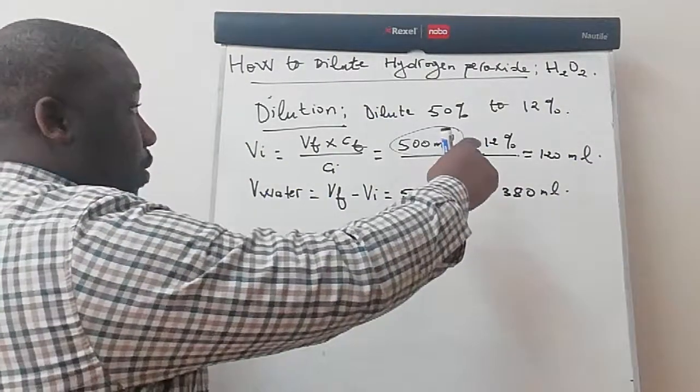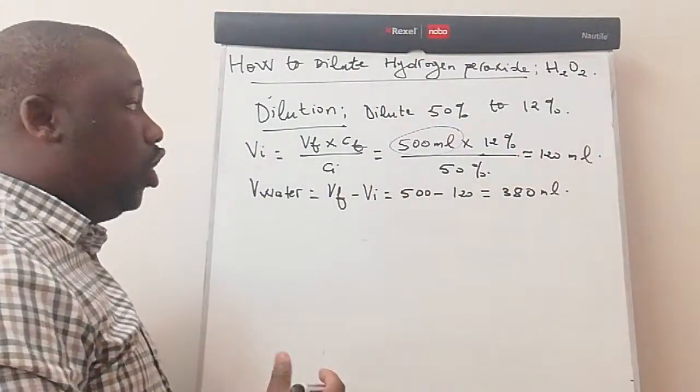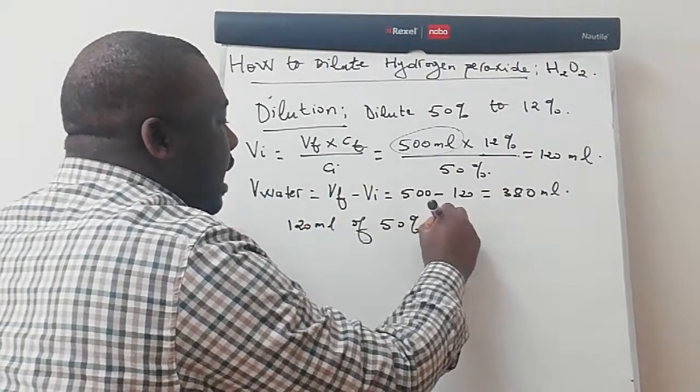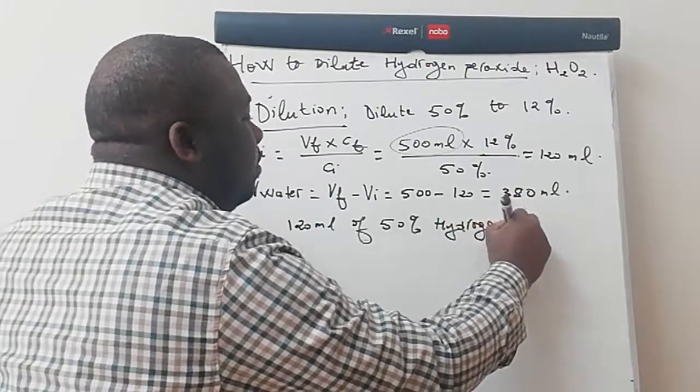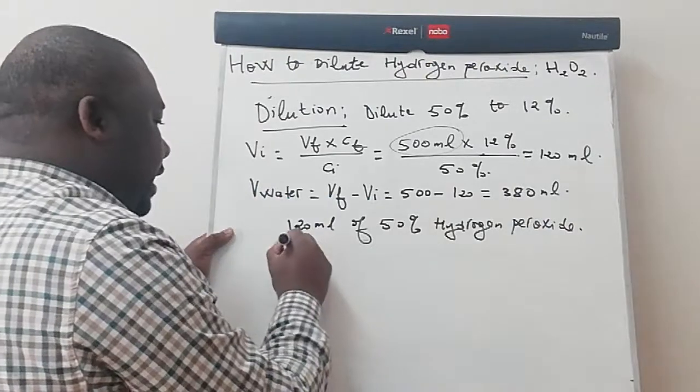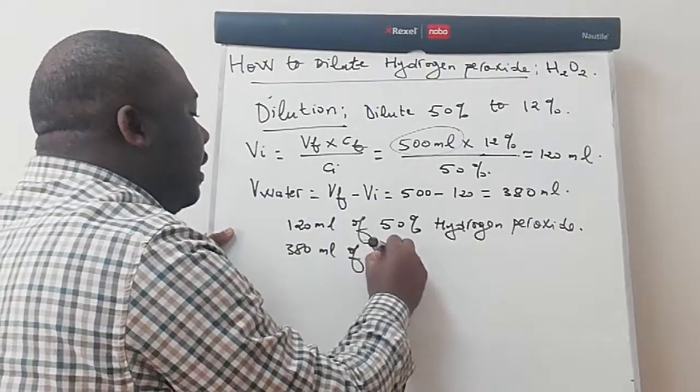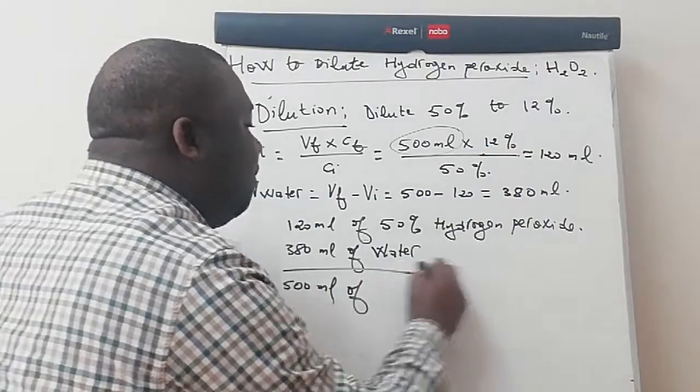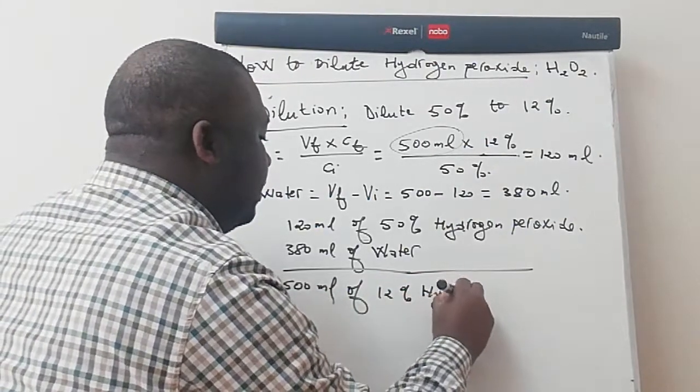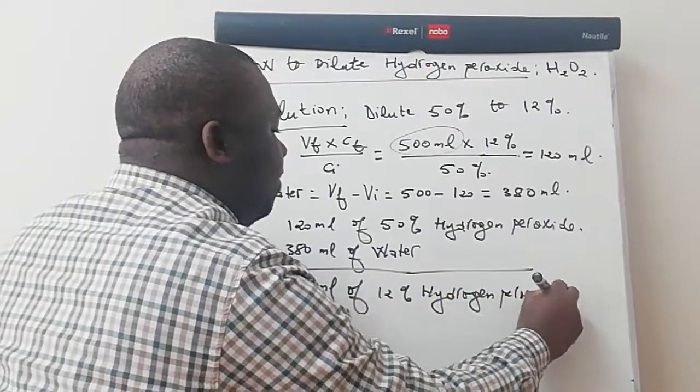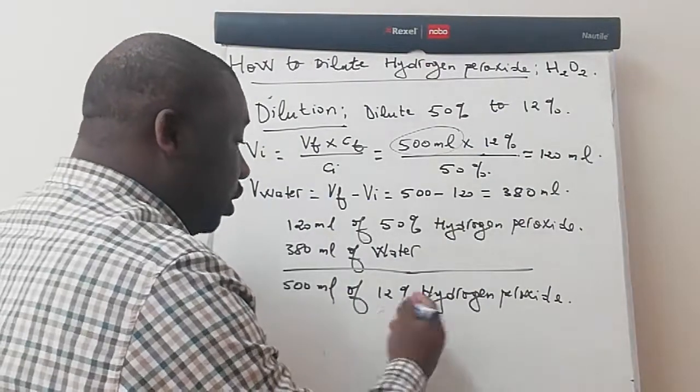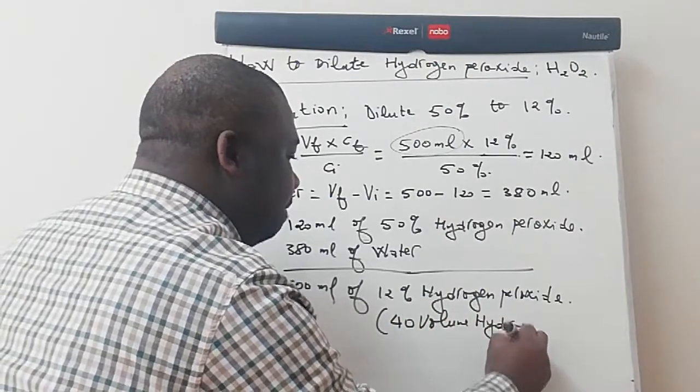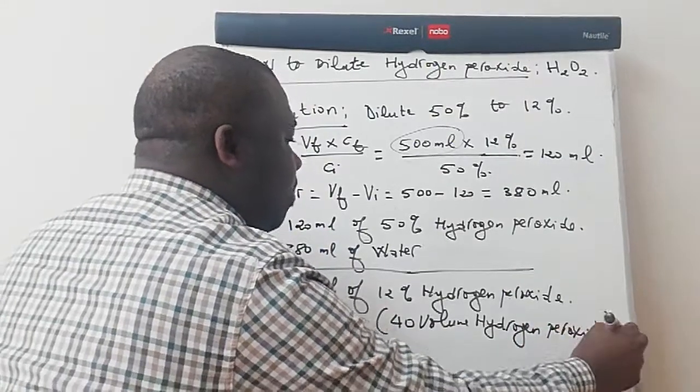For you to get your 500 ml of 12% hydrogen peroxide, what do you do? You have to add your 120 ml of 50% hydrogen peroxide to 380 ml of water for you to get 500 ml of 12% hydrogen peroxide, which is your so-called 40-volume hydrogen peroxide.